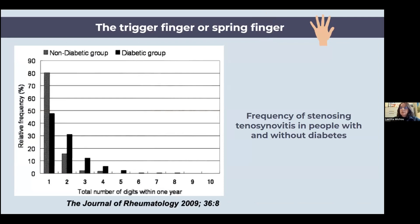Stenosing synovitis is a stiffness of the membrane which surrounds the flexor tendon of the hand. It is very common in diabetes. As shown on the graph, it is also common in non-diabetic persons, but typically only one finger is affected. When two or more fingers are affected, it is more frequent in the diabetic group than in the non-diabetic group, and people with diabetes can have all fingers affected.